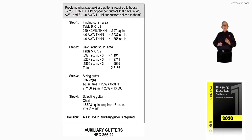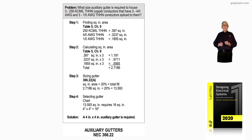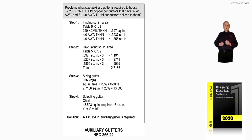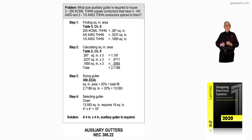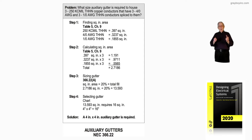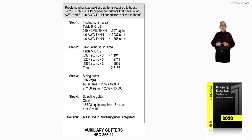We're wanting to size an auxiliary gutter to house three 250 KCMIL, which is the feeder, three THHN copper conductors, three 4/0, and three 1/0 THHN conductors spliced to the larger conductors using the splicing rules of 240.21(B).